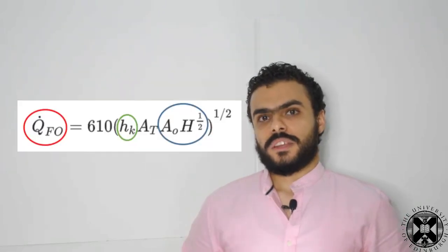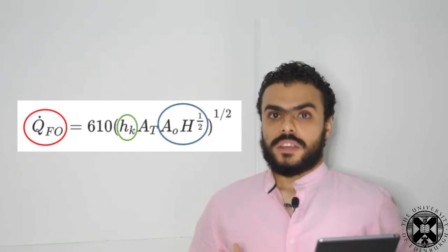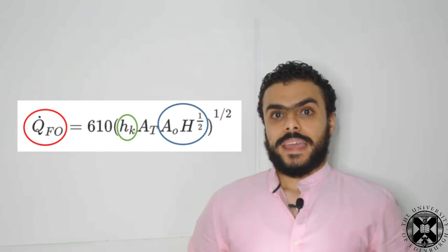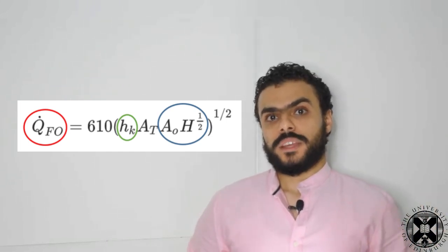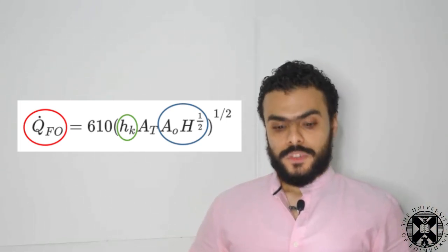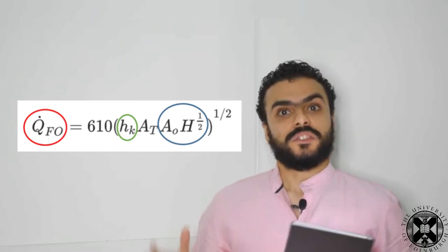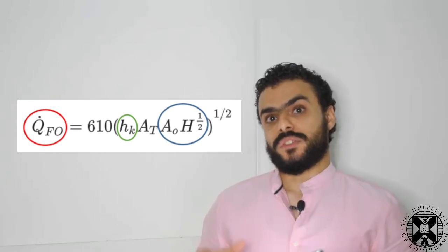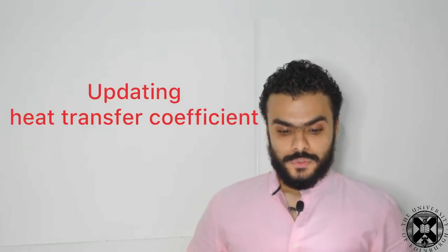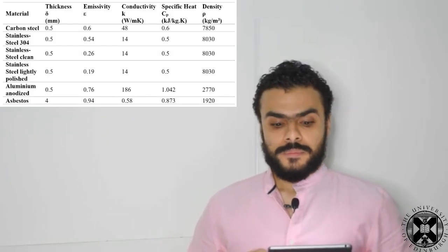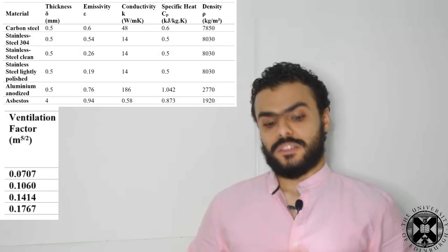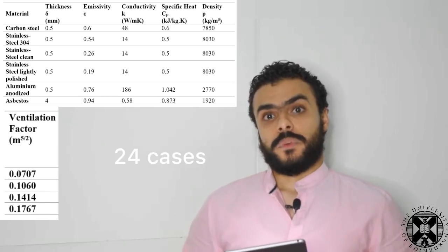Thanks to the MQH correlation, we now know that there is a good correlation between the heat release rate needed for flashover and the compartment geometry in addition to a heat transfer coefficient. So we mostly are not going to touch upon the geometry of the compartment and we have to focus on updating the heat transfer coefficient. The validated model was then used to conduct this parametric study using six different walls with different thermal properties and also four different ventilation factors, with a total of 24 compartment fires.